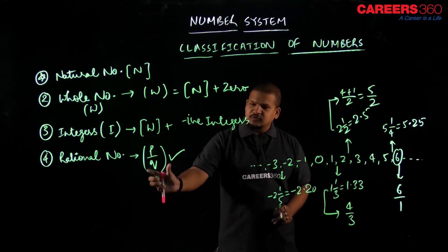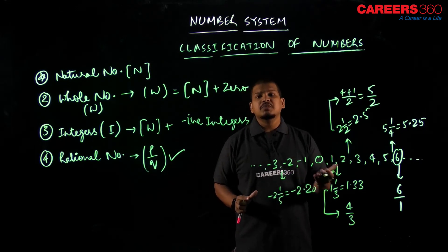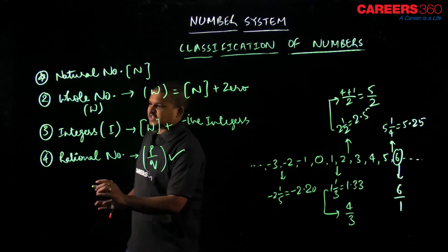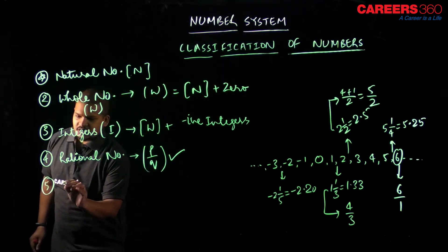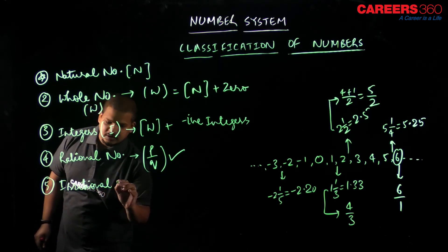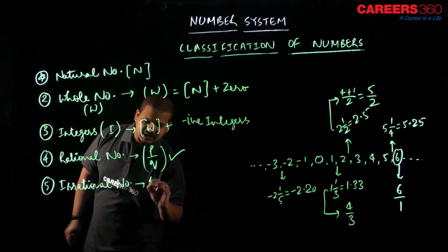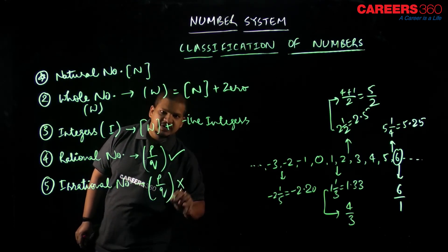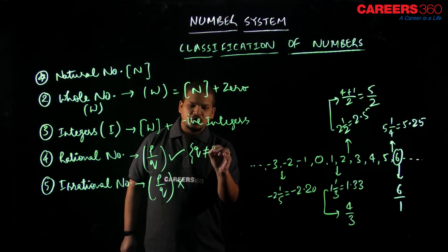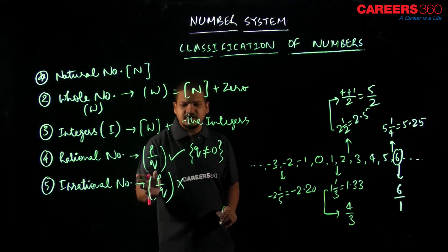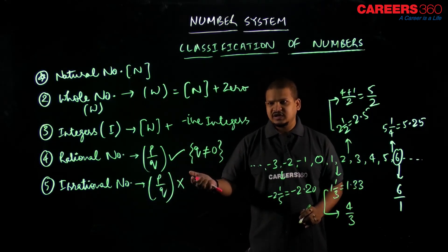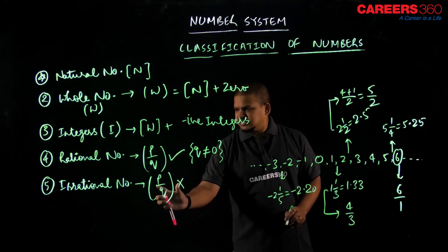If certain numbers can be written in the form of p/q, then there are numbers which cannot be written in the form of p/q — and they are known as irrational numbers. They are the numbers which simply cannot be written in the form of p/q. One condition here is that q should not be equal to 0, otherwise it would be an undefined form.